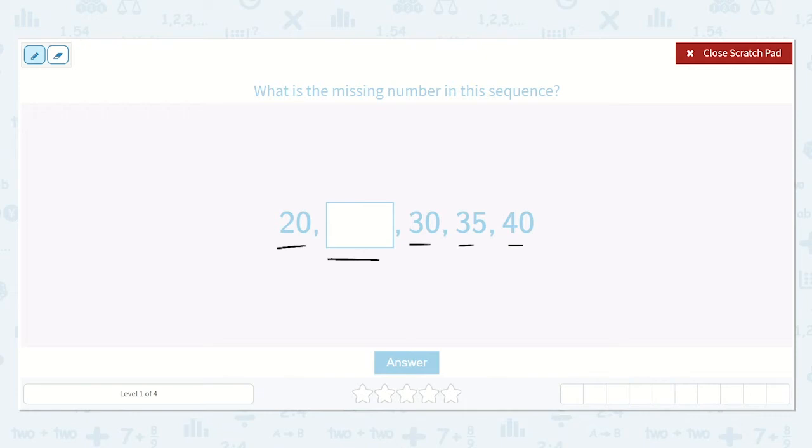Notice the pattern, 20, and then we do have our missing number, but then we have 30, which ends in a 0, then we have 35, which ends in a 5, then we have 40, that ends in a 0, then we would have 45, that ends in a 5. So this one ends in 0, so this one should end with what? Yes, a 5.